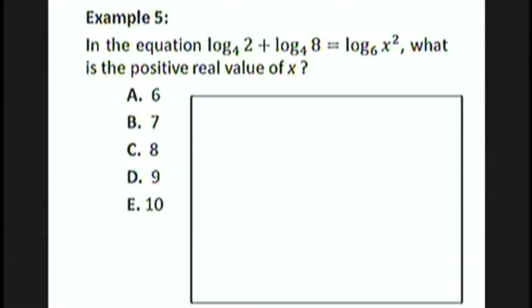Okay, let's look at a couple of examples. In the equation log base 4 of 2 plus log base 4 of 8 equals log base 6 of x squared, what is the positive real value of x? Well, we could use a rule of logarithms to combine the two logarithms on the left-hand side of the equation as log base 4 of 16. Notice that I'm multiplying 2 and 8 together because the sum of two logarithms is the product under a single logarithm.